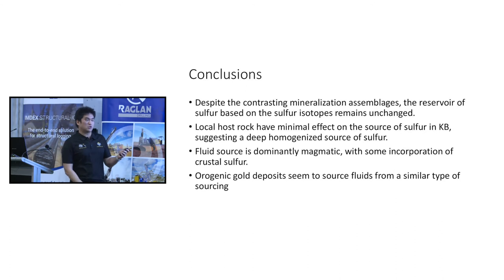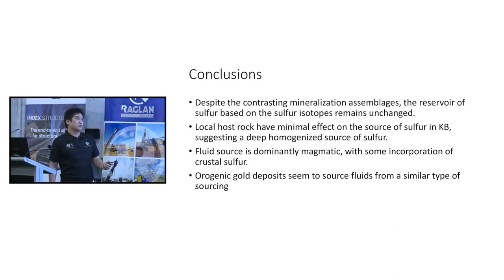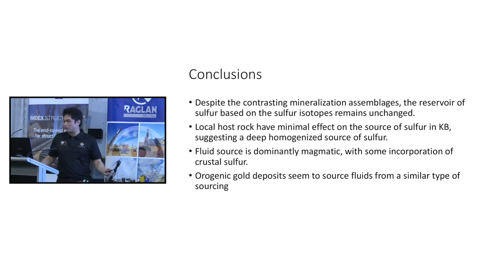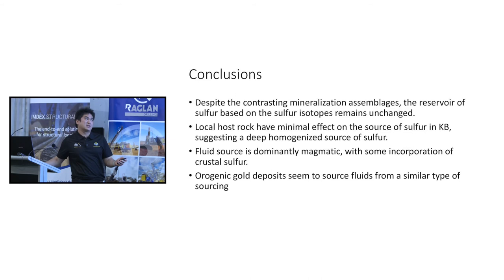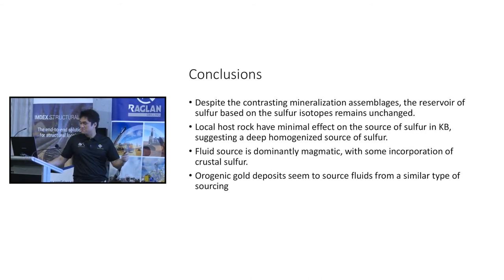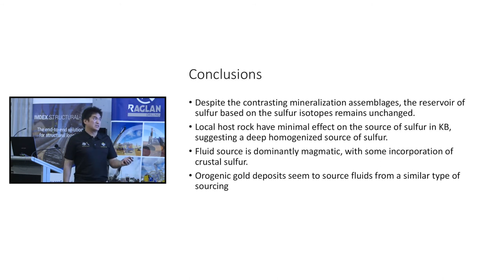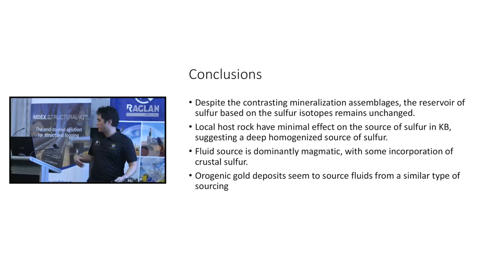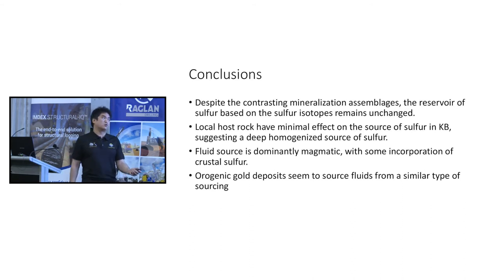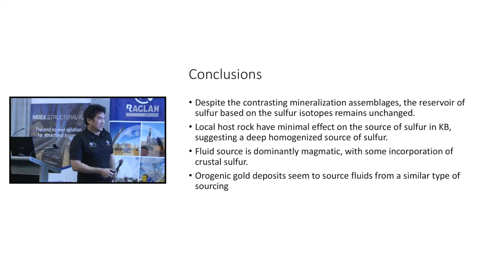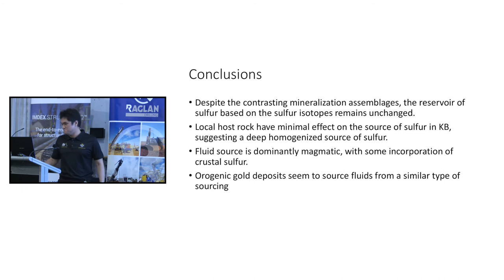The conclusion of this section is that despite different mineralization assemblages, the sulfur reservoir remains unchanged — they source from very similar fluids. Local host rock has minimal effect on the sulfur source. This suggests a deep homogenized source of sulfur that is magmatic- or mantle-dominated, with minor crustal sulfur incorporated as fluids ascend. Orogenic gold deposits in the Yilgarn Craton appear to share a very similar type of sourced fluid.